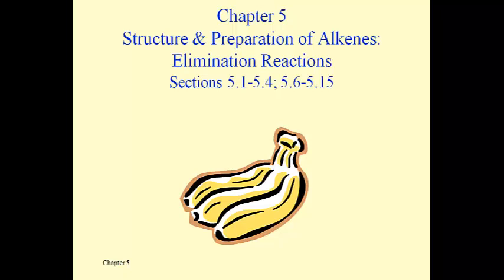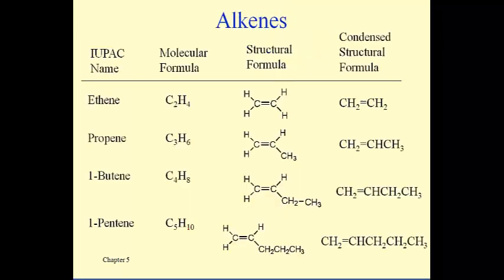The picture of the bananas here is because the simplest alkene, shown on the next slide, is found in bananas. Ethene is a hormone for bananas — it brings about the ripening. When bananas are transported they are sometimes handled in a way to delay that ripening, allowing the ethene they create to escape. In other instances, ethene can be added to or sprayed onto bananas to bring about the ripening process.